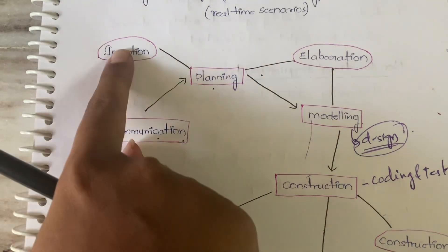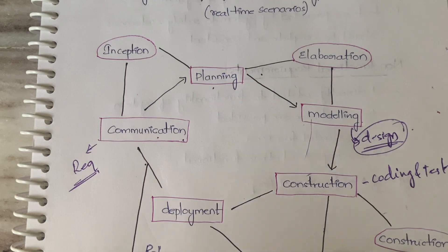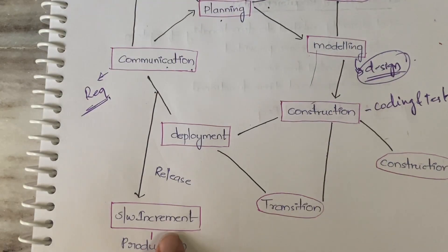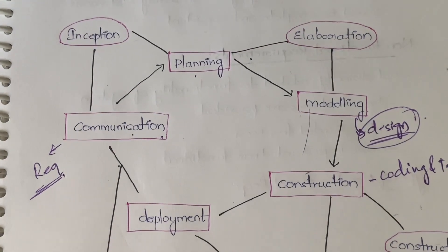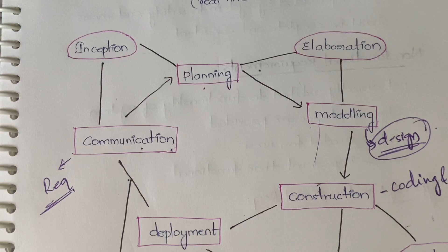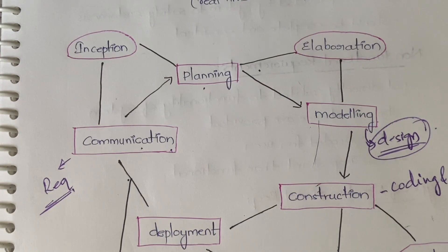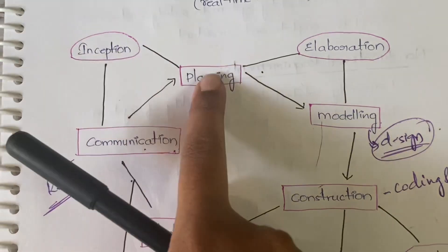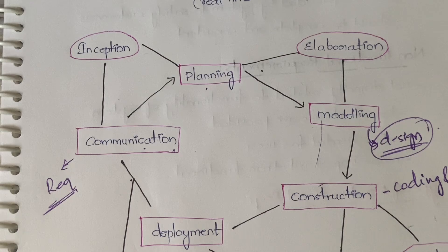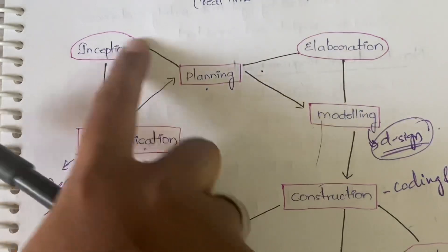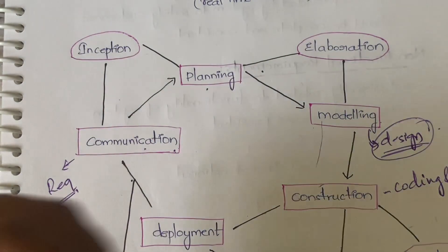Now what are these - inception, elaboration, construction, transition, software increment, production? Inception is not a movie name. Inception has two activities: number one is communication and number two is planning. Communication is communicating with the customers, gathering the requirements, and those requirements are planned accordingly so you can deliver the software on time with high performance and efficiency.